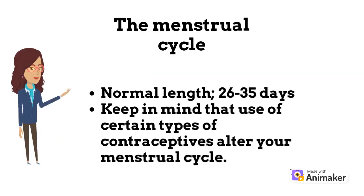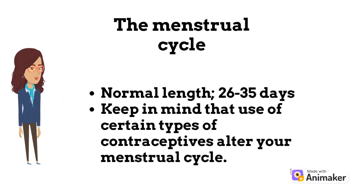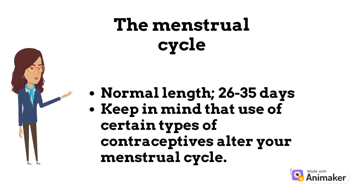The menstrual cycle, which is counted from the first day of one period to the first day of the next period, is not the same length for every woman. The normal length is 26 to 35 days, and ovulation occurs between the 12th to 14th day for a 28-day cycle. A cycle of less than 26 days and more than 35 days is not normal.